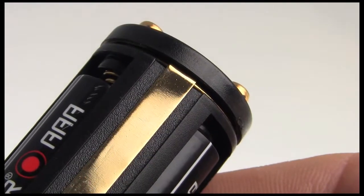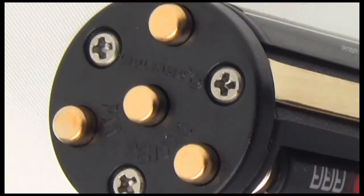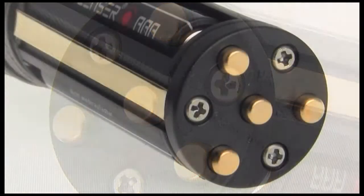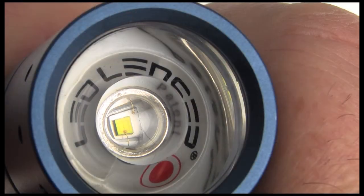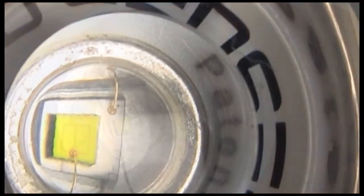The torch's Cree LED is incredibly efficient. Three AAA batteries provide up to 120 hours of usable light.